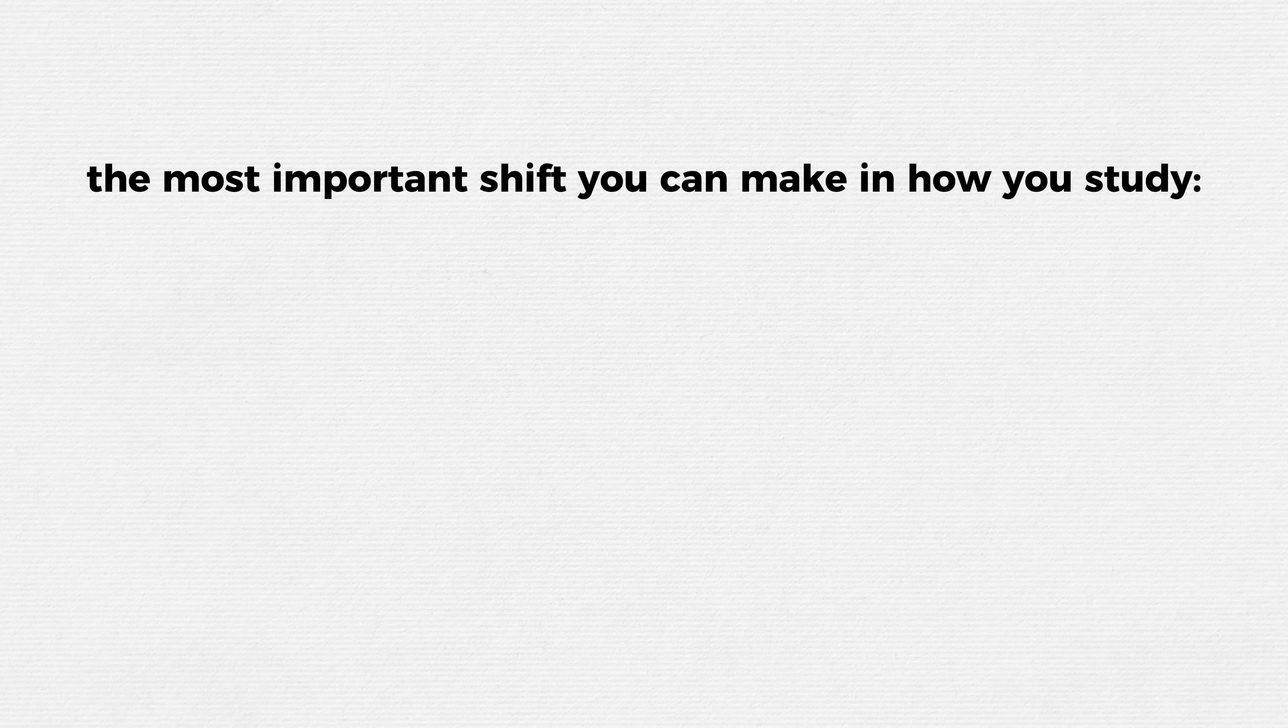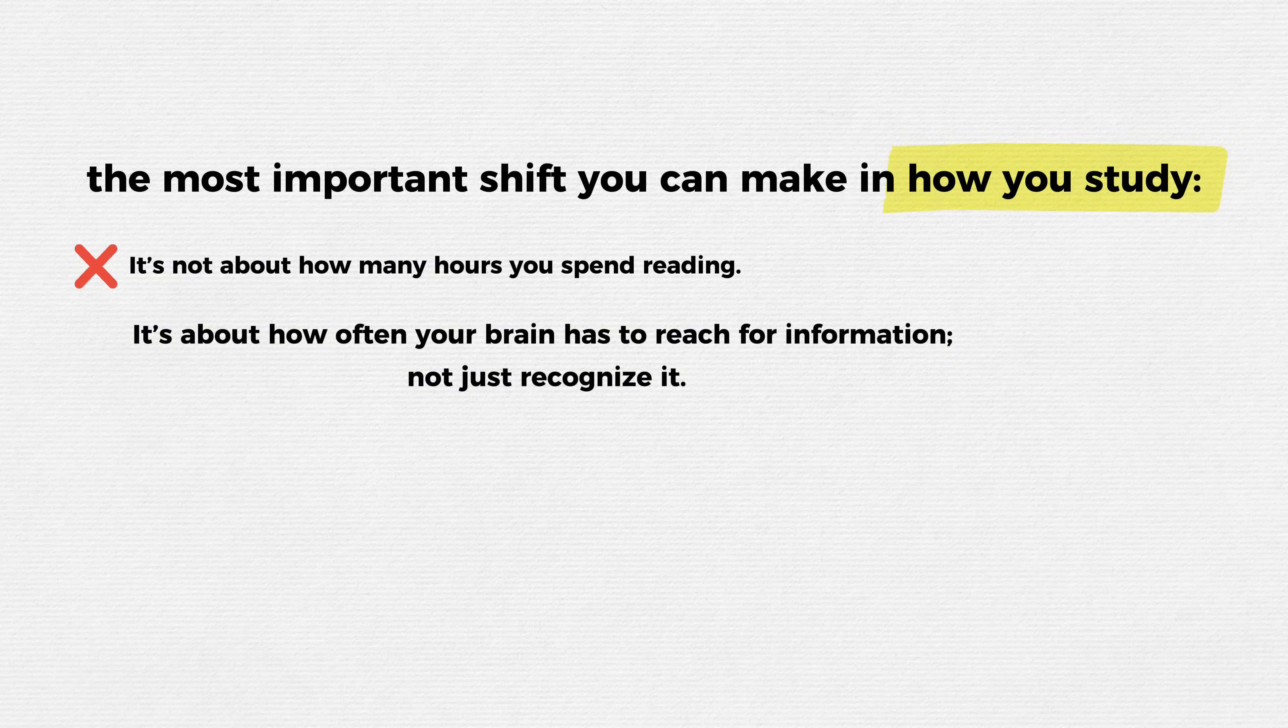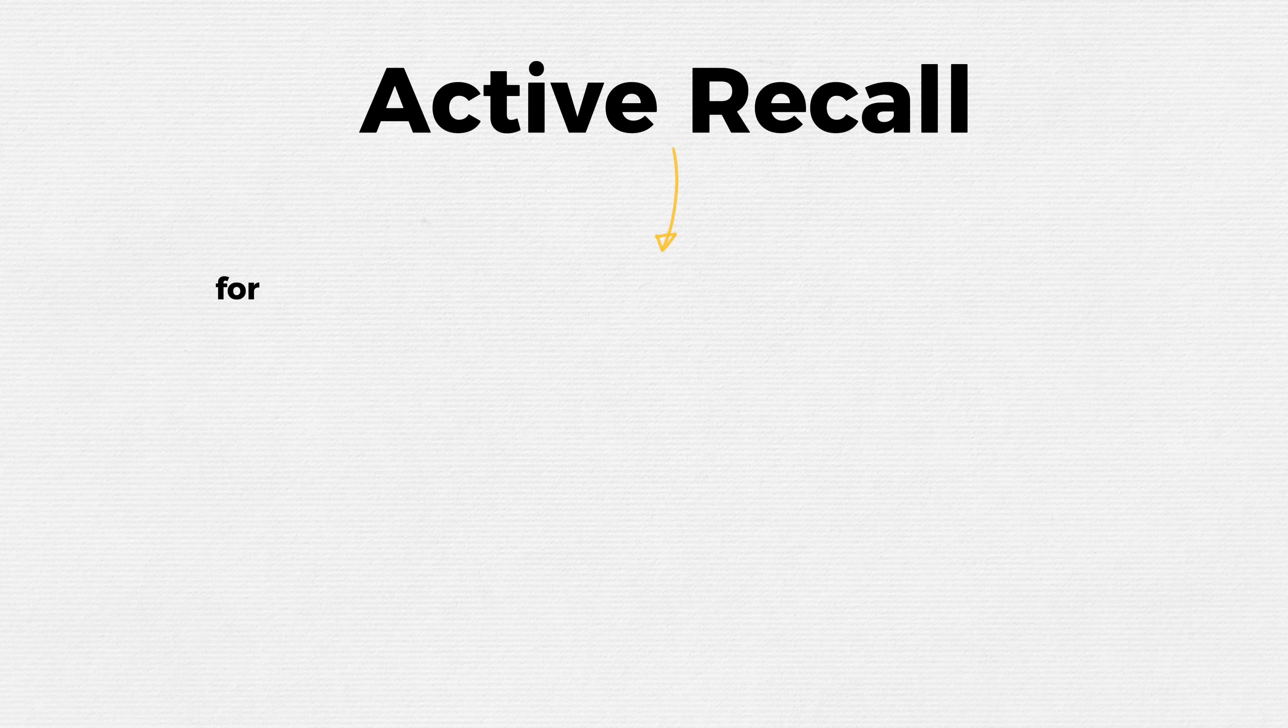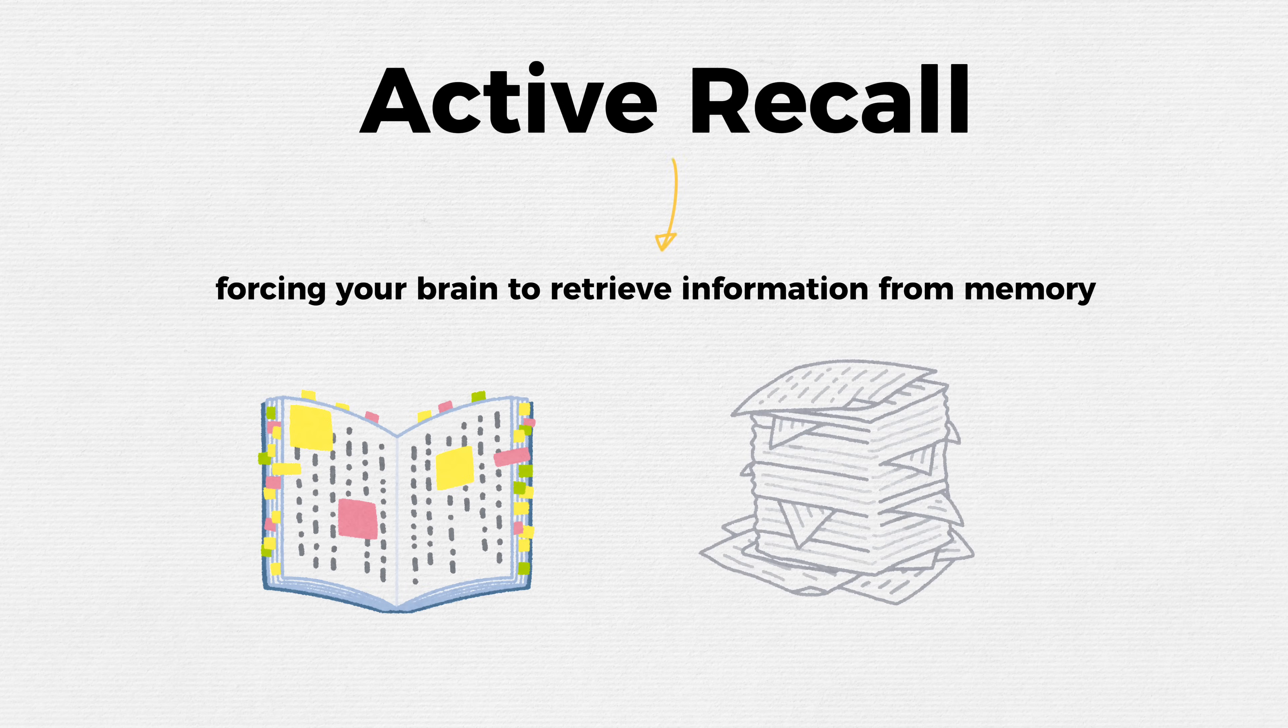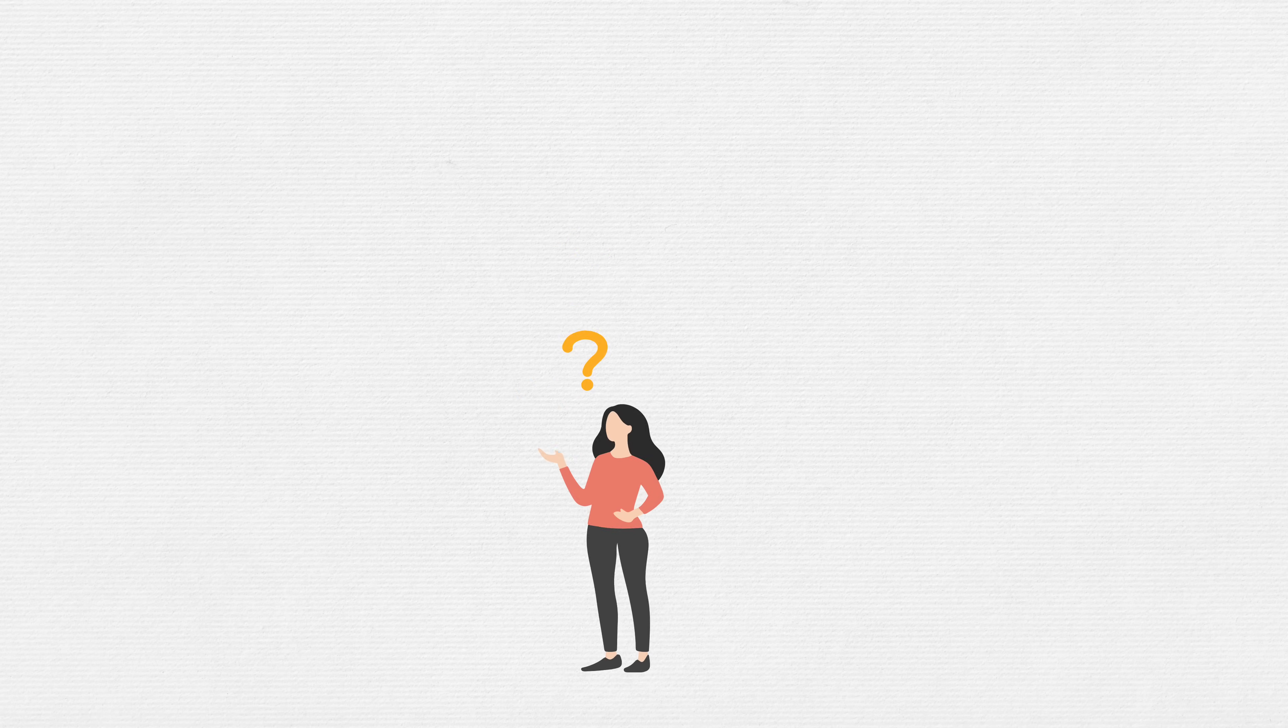Let's talk about the most important shift you can make in how you study. It's not about how many hours you spend reading. It's about how often your brain has to reach for information, not just recognize it. Active recall is the process of forcing your brain to retrieve information from memory. No books, no notes, no hints. You ask yourself a question and try to answer it cold.